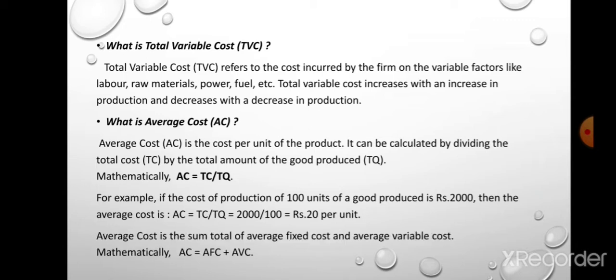We also have to remember that average cost is the sum total of average fixed cost and average variable cost. We can mathematically symbolize it as AC = AFC + AVC. So there are two ways of calculating average cost: one is AC = TC / TQ, dividing total cost by total quantity; another method is if AFC and AVC are given, just take their sum to get average cost.